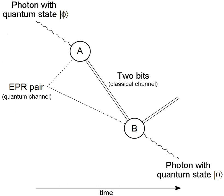Over long distances, the primary method of operating quantum networks is to use optical networks and photon-based qubits, due to optical networks having a reduced chance of decoherence. Optical networks have the advantage of being able to reuse existing optical fiber. Alternately, free space networks can be implemented that transmit quantum information through the atmosphere or through a vacuum. Optical networks using existing telecommunication fiber can be implemented using hardware similar to existing telecommunication equipment. This fiber can be either single-mode or multi-mode, with multi-mode allowing for more precise communication.